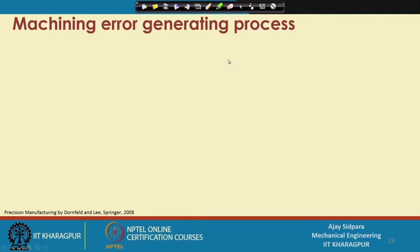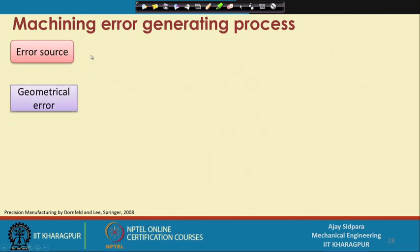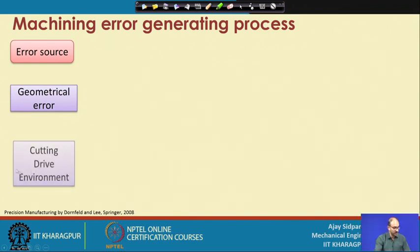Now, machining error generating processes - first we have to identify what are the sources of error. Mostly sources of error are geometrical errors, cutting process errors, drive errors, and environmental errors.